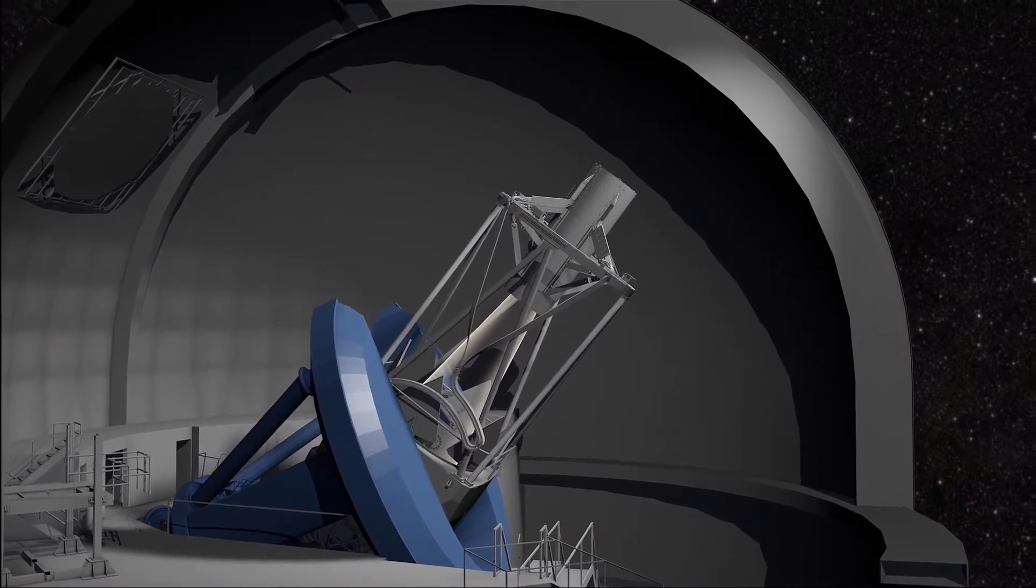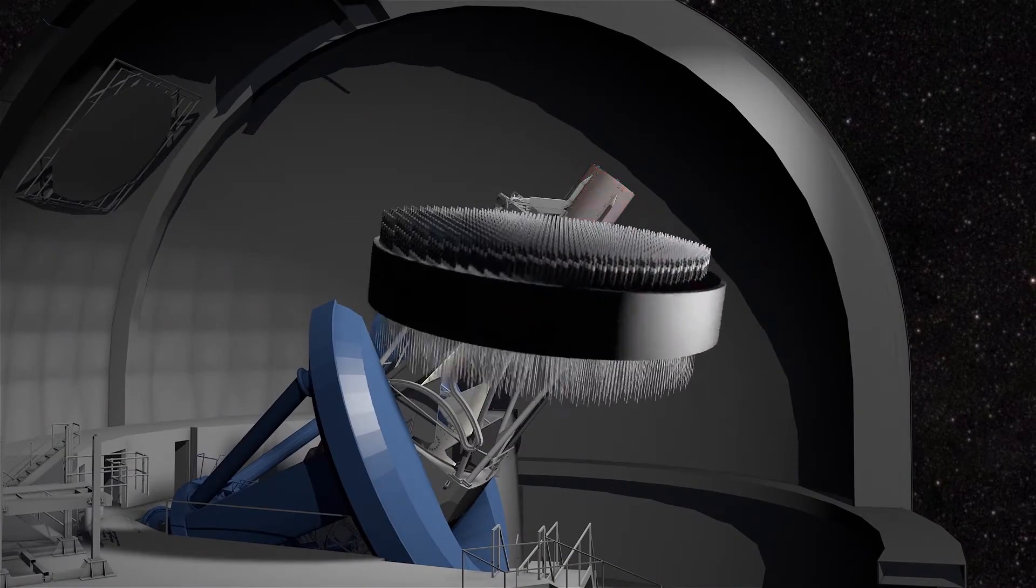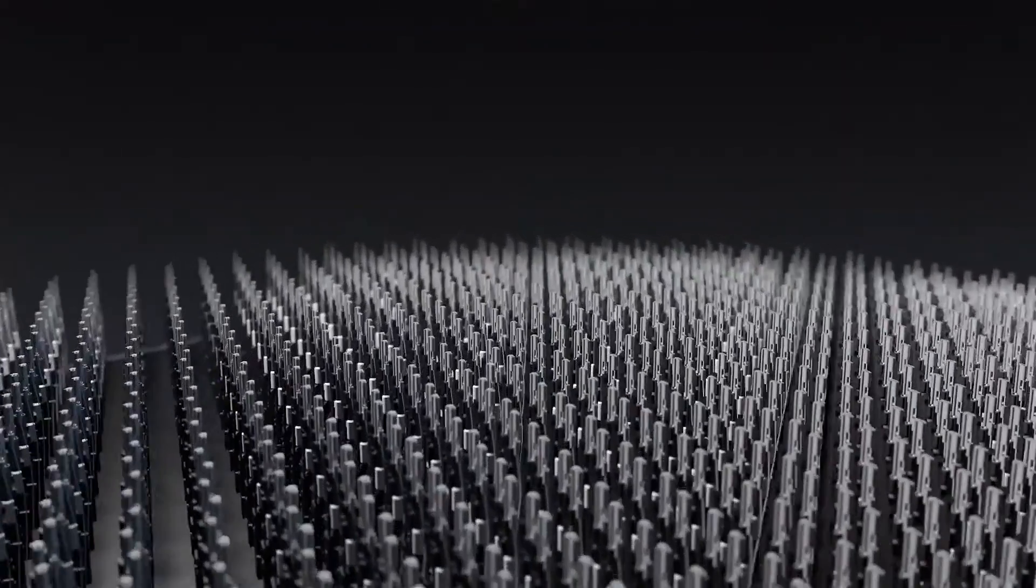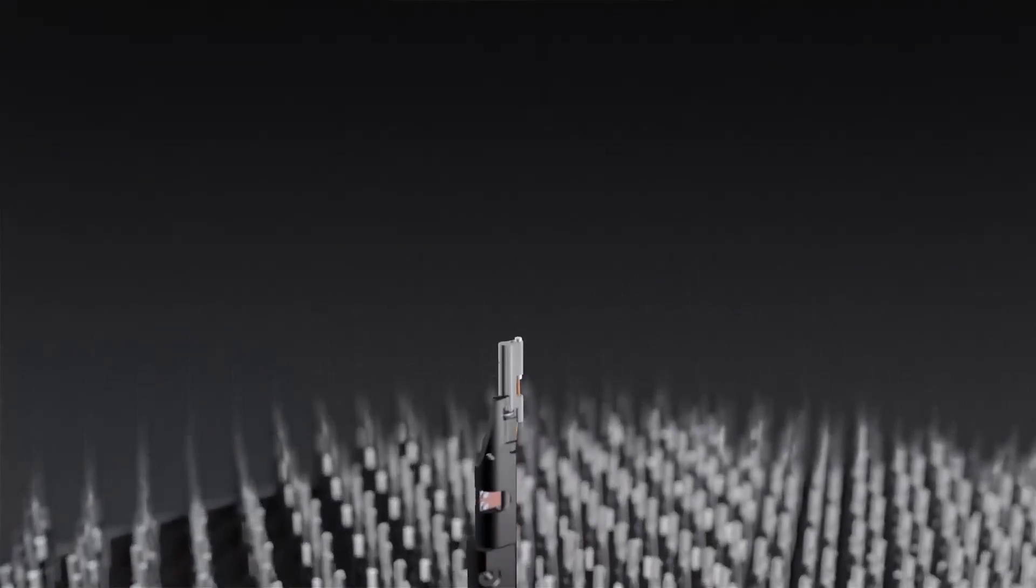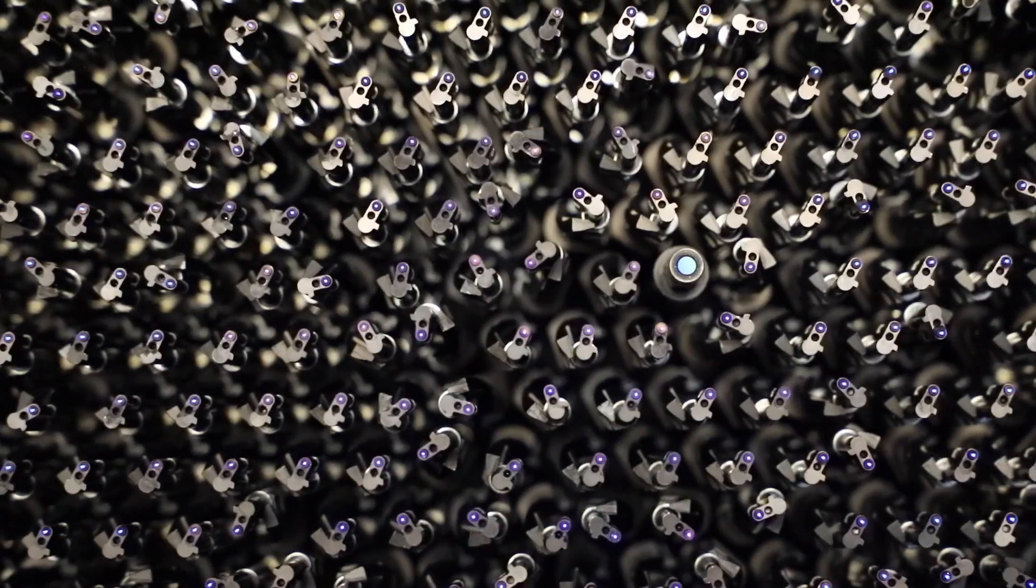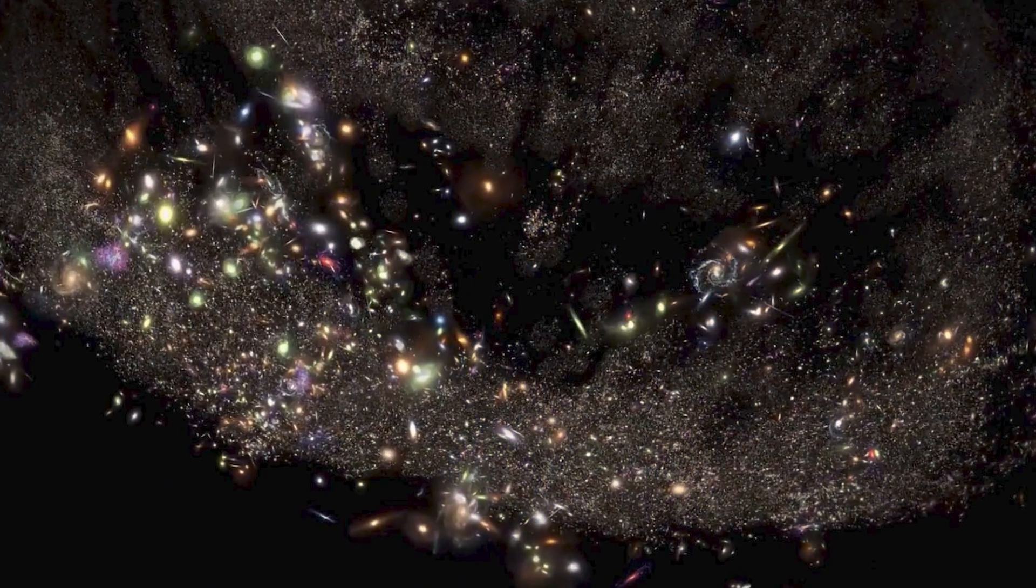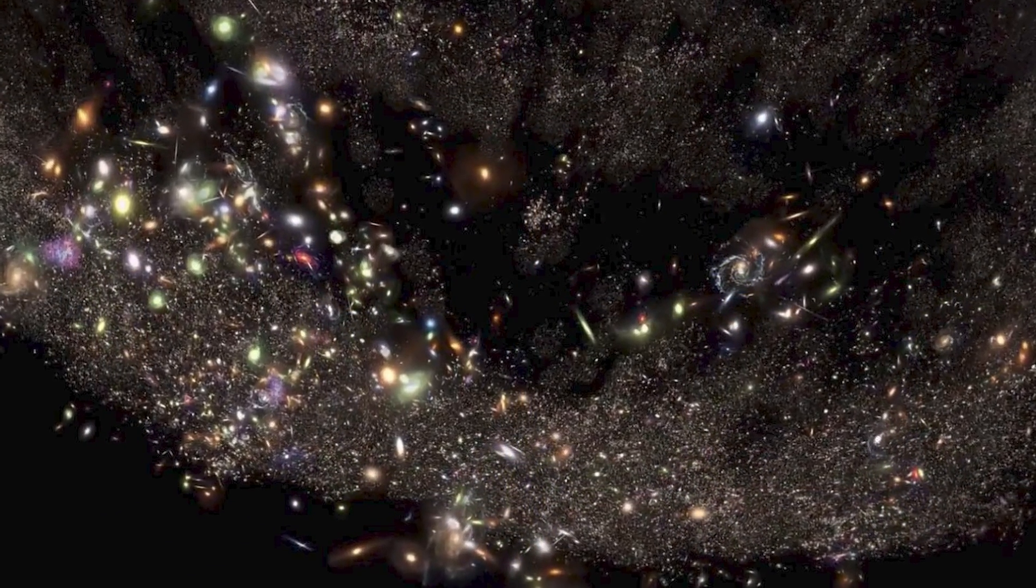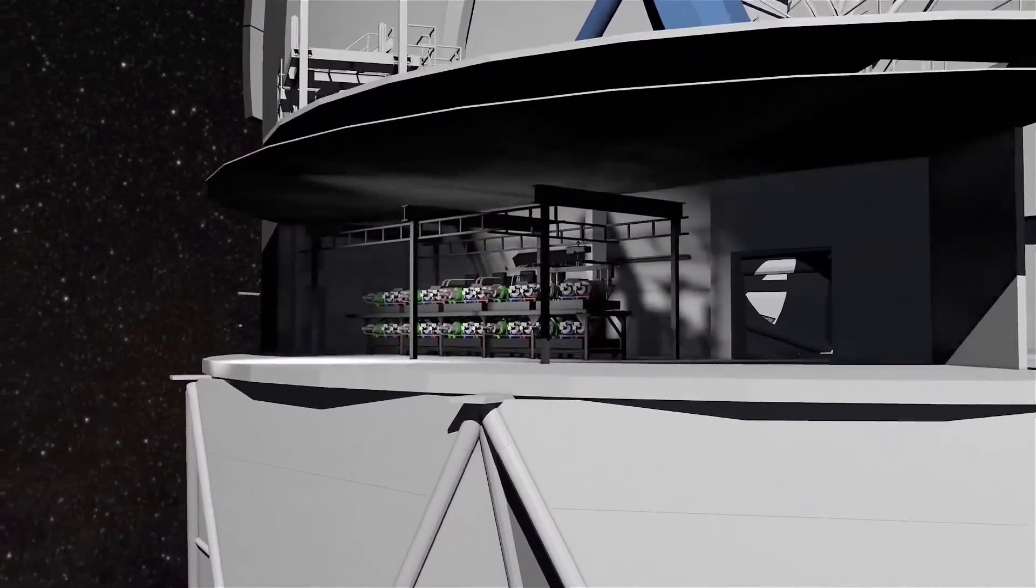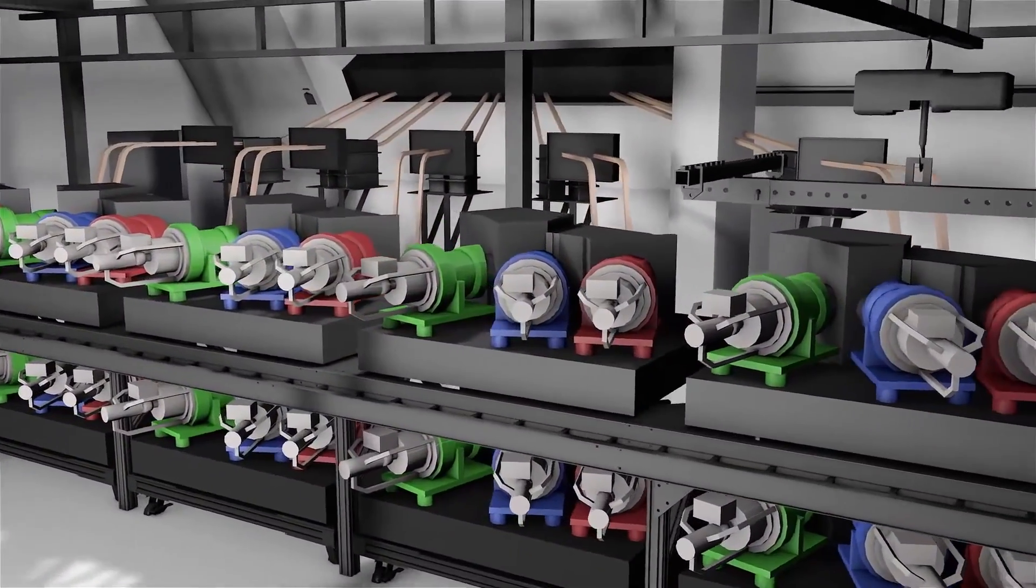As the light from galaxies reaches the focal plane, an intricate dance unfolds. 5,000 robotic positioners, each carrying a single optical fiber, swiftly maneuver into pre-selected sequences, aligning with their celestial targets. This automated choreography allows DESI to simultaneously observe thousands of galaxies, guiding their light down the length of the telescope to 10 specialized spectrographs.